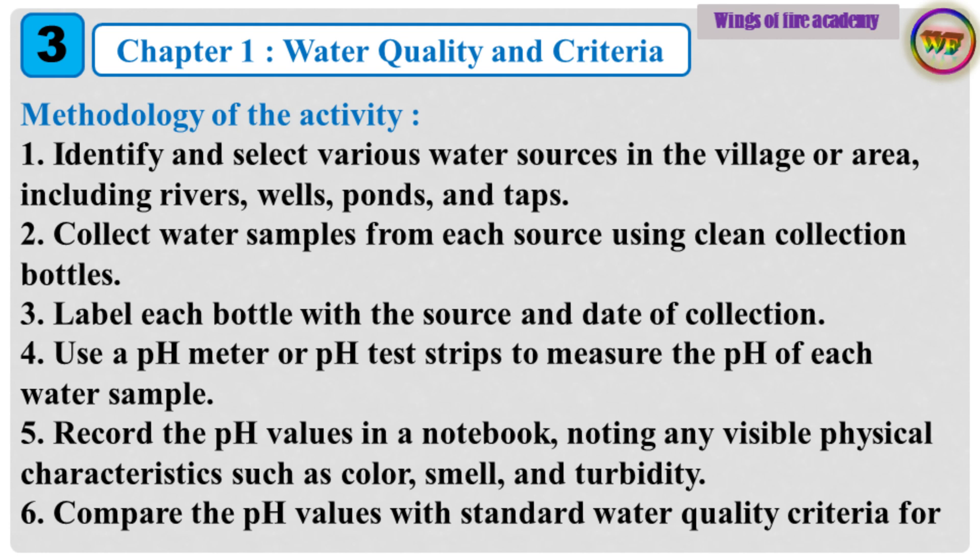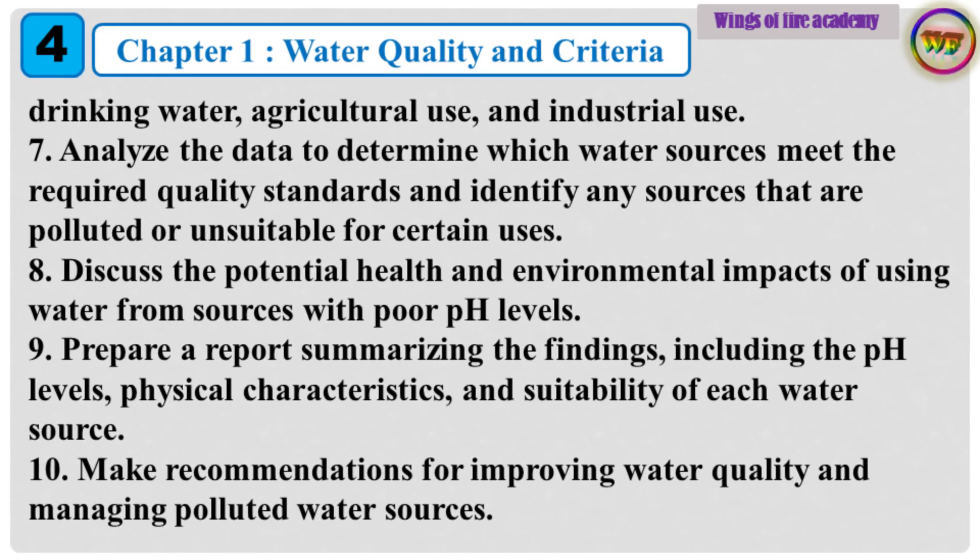6. Compare the pH values with standard water quality criteria for drinking water, agricultural use, and industrial use. 7. Analyze the data to determine which water sources meet the required quality standards and identify any sources that are polluted or unsuitable for certain uses. 8. Discuss the potential health and environmental impacts of using water from sources with poor pH levels. 9. Prepare a report summarizing the findings, including the pH levels, physical characteristics, and suitability of each water source.